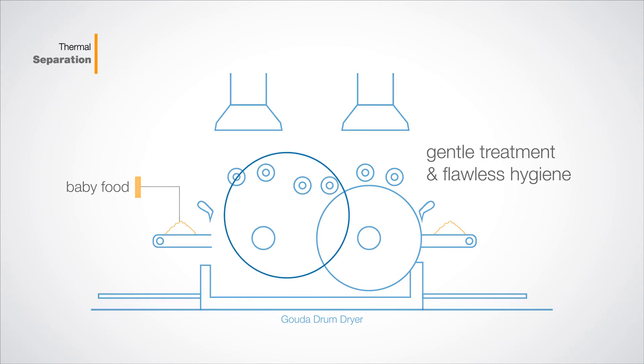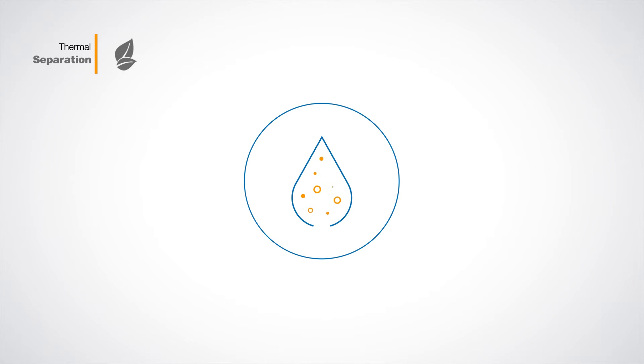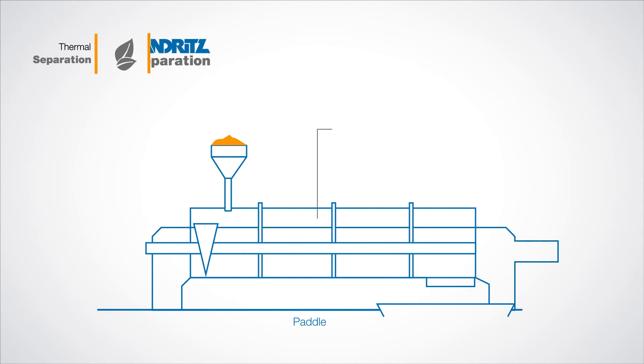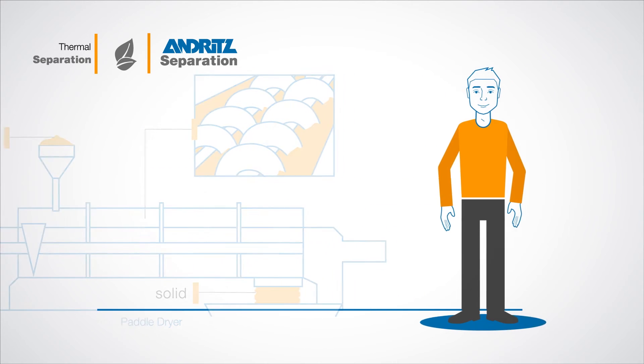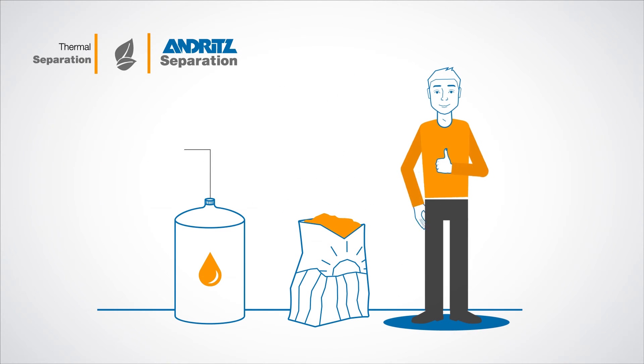And what's more, thermal drying also plays a major role in the environmental industry like in wastewater treatment and recycling. Our so-called paddle dryer extracts water from the sewage sludge which is then suitable for use as a secondary fuel for electricity or as fertilizer.